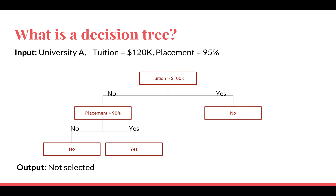How does Ram take this decision? He has two criteria: one is what the tuition fees are like, and the second is what the placement is like after somebody graduates. He collects data on these two criteria for all five universities and then creates a flow diagram structure. This is actually how a decision tree looks. He first asks the question about tuition fees, and based on the answer he then asks about placement percent, and then takes his final decision.